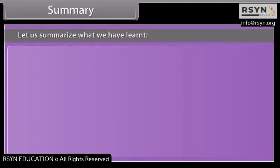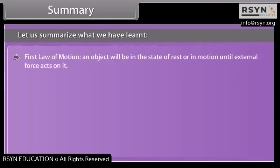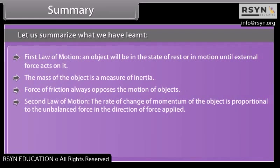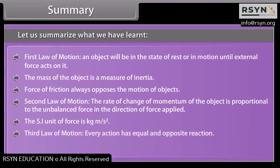Summary. Let us summarize what we have learned. First law of motion: an object will be in the state of rest or in motion until external force acts on it. The mass of the object is a measure of inertia. Force of friction always opposes the motion of objects. Second law of motion: the rate of change of momentum of the object is proportional to the unbalanced force in the direction of force applied. The SI unit of force is kilogram meter per second square. Third law of motion: every action has equal and opposite reaction. The total momentum is always conserved.